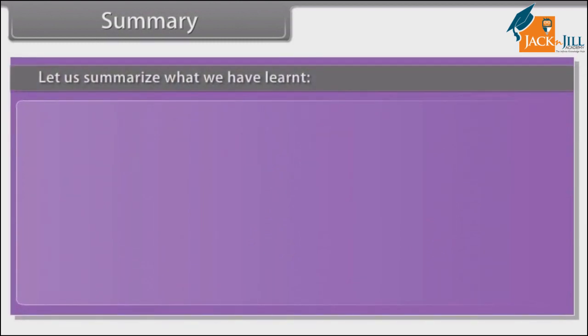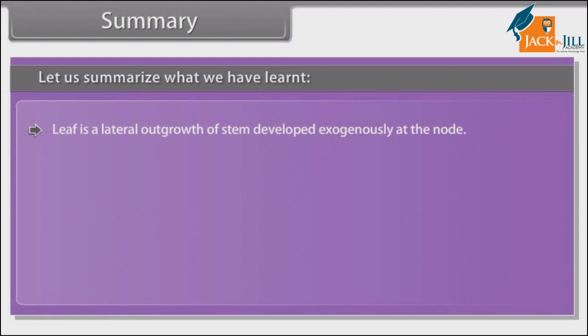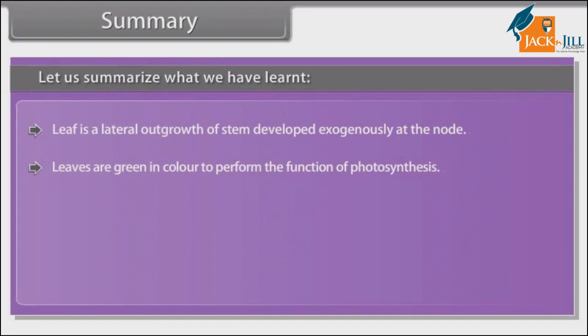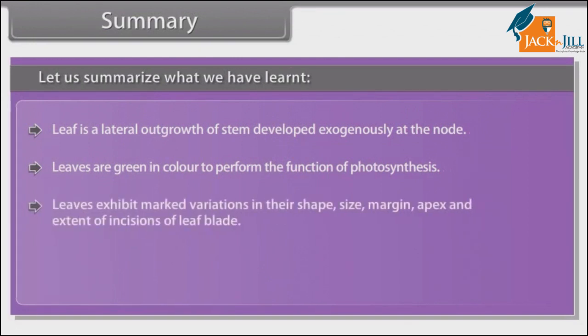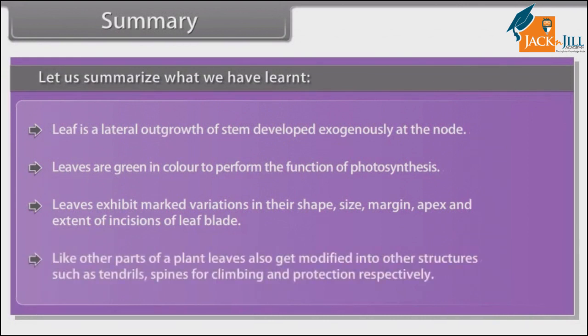Let us summarize what we have learned. Leaf is a lateral outgrowth of stem developed exogenously at the node. Leaves are green in color to perform the function of photosynthesis. Leaves exhibit marked variations in their shape, size, margin, apex and extent of incisions of leaf blade. Like other parts of a plant, leaves also get modified into other structures such as tendrils and spines for climbing and protection respectively.